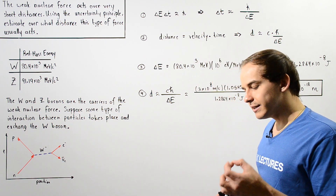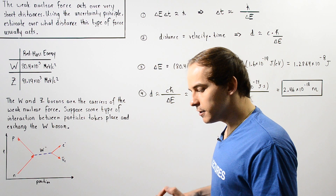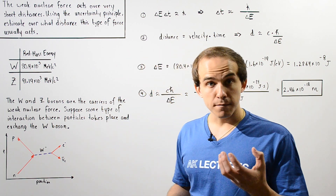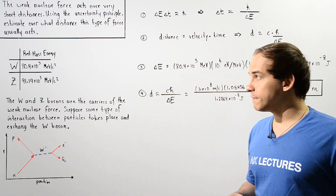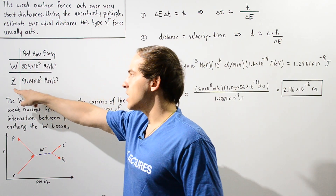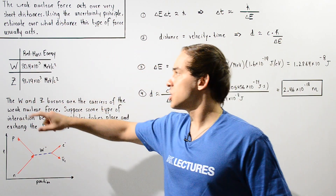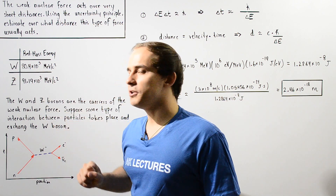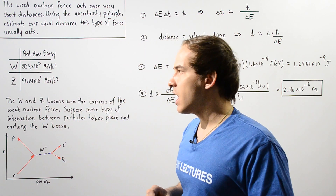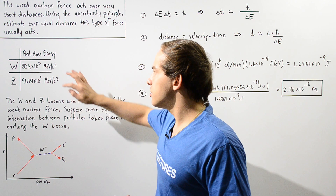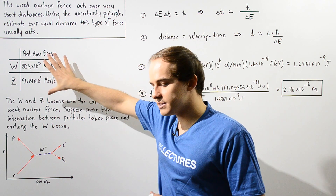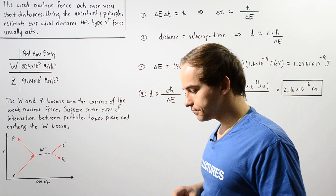Recall that the gauge bosons — the fundamental particles that carry or mediate the weak nuclear force — are the W gauge boson, which comes in two types: W positive and W negative, and the Z gauge boson. Their respective rest mass energies are given in this table.